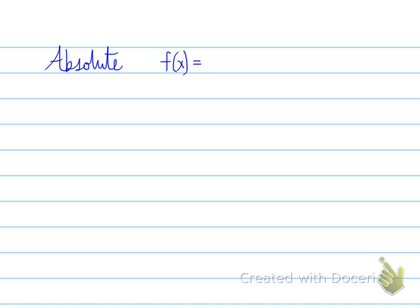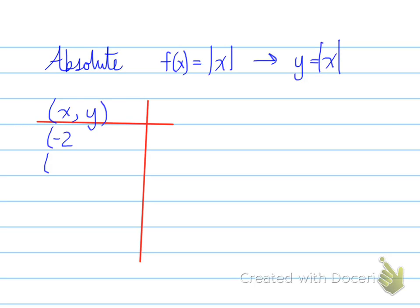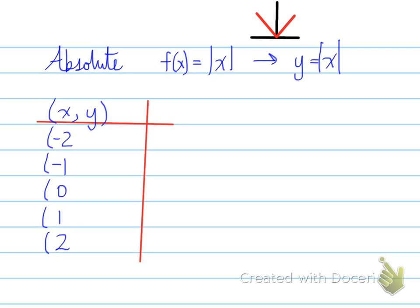Absolute function. What does an absolute function look like? It has the absolute sign, and the same x values we've been using all along, but this graph is going to look a little funny. It will be two lines going in either direction — one this way and one this way — like a V. This V is actually two linear functions; it's a piecewise function for absolute.